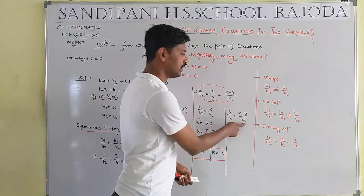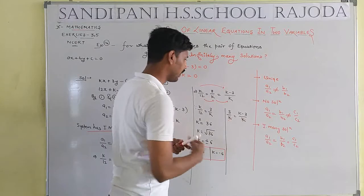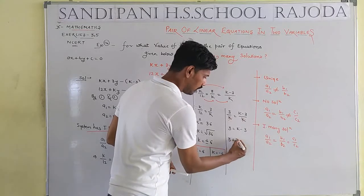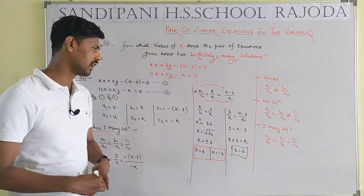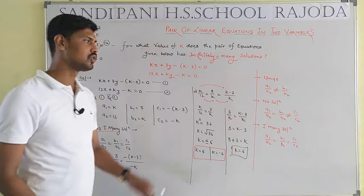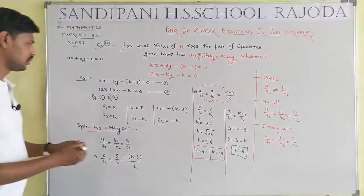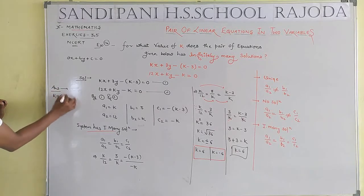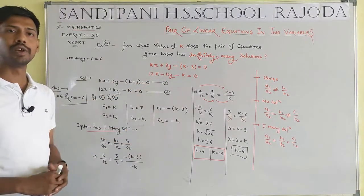Now taking the second equals the third: 3/k equals (k minus 3)/k. Since k is the denominator it cancels, giving 3 equals k minus 3, so k equals 6. We now check both values. According to the condition for infinite many solution, the resultant answer is k equals 6. k equals minus 6 does not satisfy all three ratios, so k equals 6 is the answer.